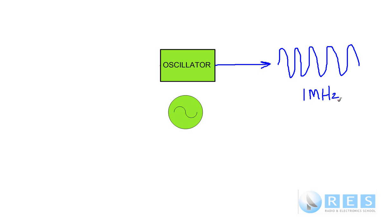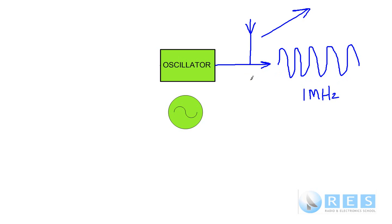If we put a 1 MHz signal into an antenna it will radiate. So if we were to put an antenna on this oscillator we would have a very simple transmitter. All the oscillator is doing is — let's say it's producing a 1 MHz sine wave — well, 1 MHz fed into an antenna will radiate electromagnetic radiation, radio waves.